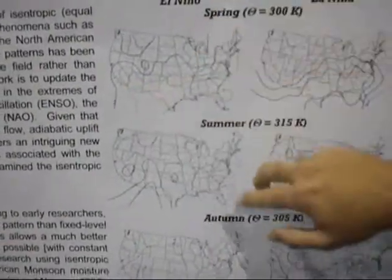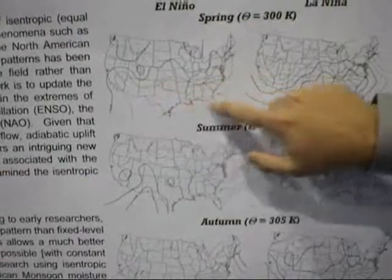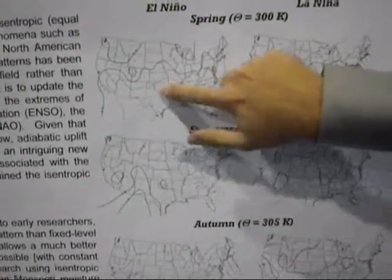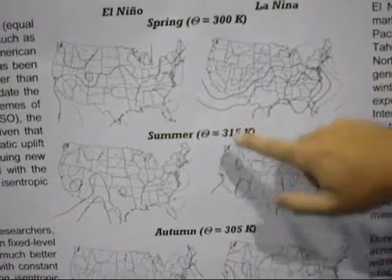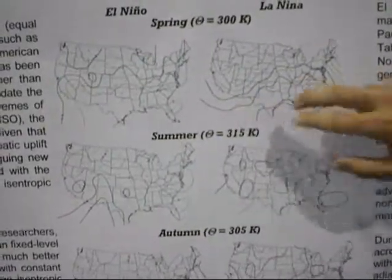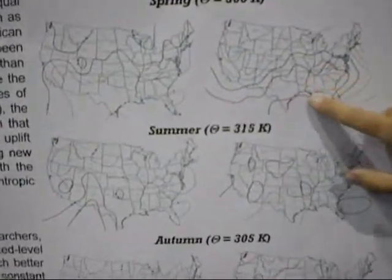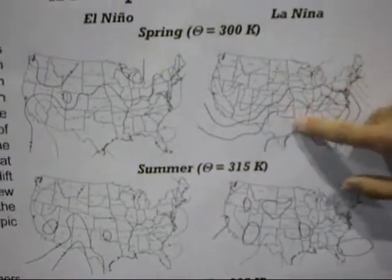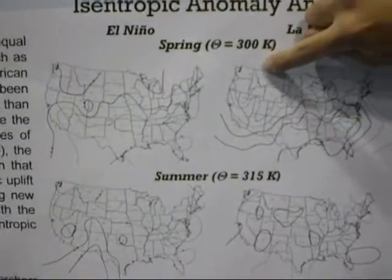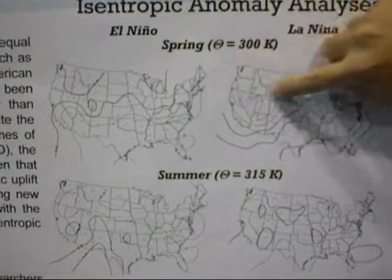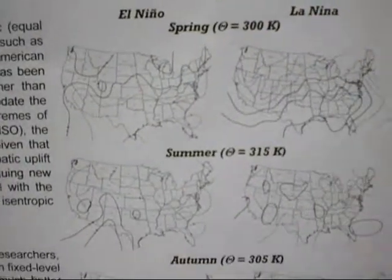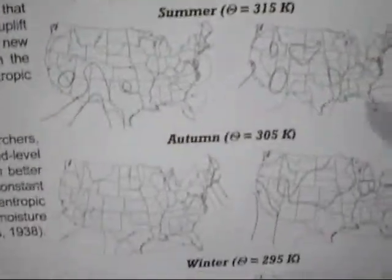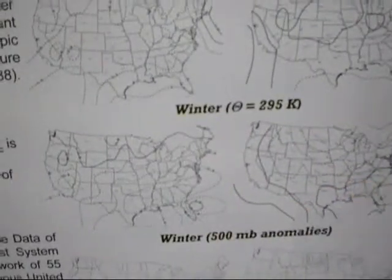Here is your El Niño for spring — you have an anomalous isentropic trough, so you have moisture moving in and more rainfall. In La Niña years, you see an isentropic ridge, a strong isentropic ridge, so dry conditions, with the anomalous isentropic trough further north bringing more moisture and rainfall there. You can see this pattern throughout all of the months — it's not quite as strong in summer and autumn, but the same typical pattern appears in the winter months.